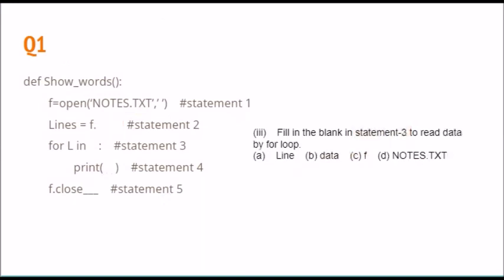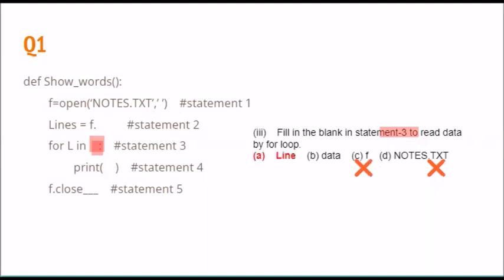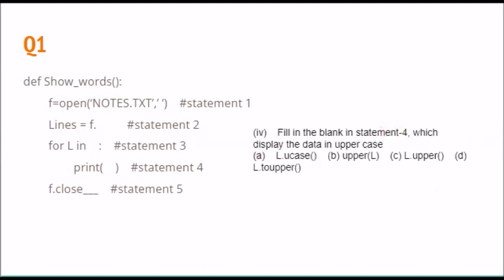For statement number three, we need to read the data using a for loop. The options we have are: line, data, f, and notes.txt. Since notes.txt is already being used and f is just a file object, the correct answer is option A — that is, line, which is the name of the variable used in the loop.